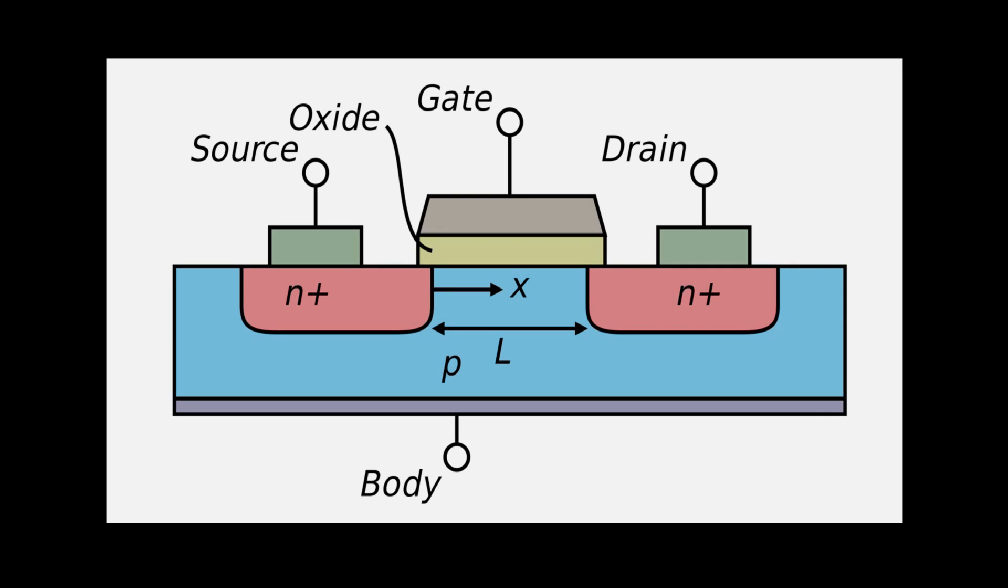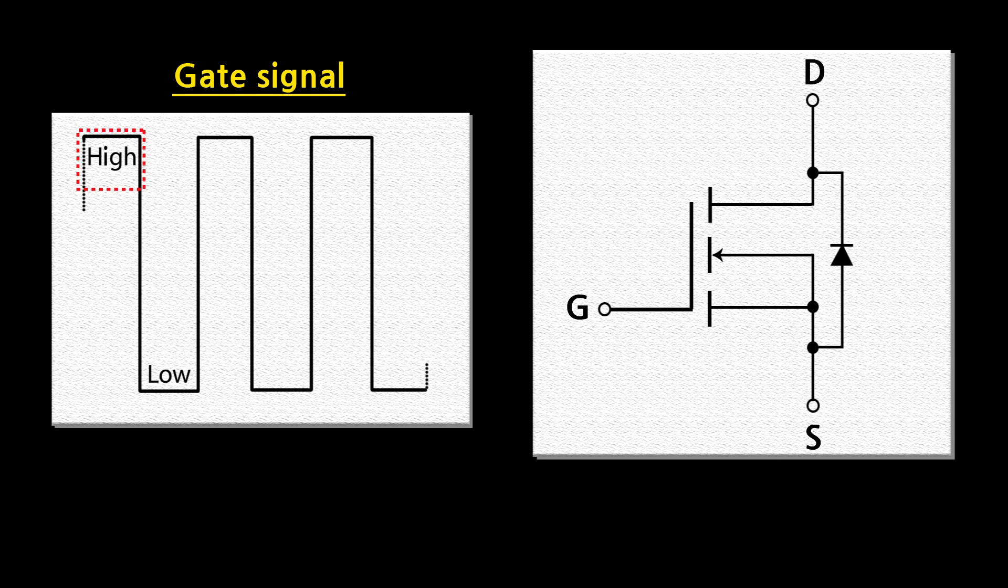A MOSFET has three terminals: the gate, the source, and the drain. You can think of the gate terminal as the switch controller and the source-drain terminals as the switch. When the gate signal is high, current can flow from the drain to the source. But when the gate signal is low, current cannot flow.